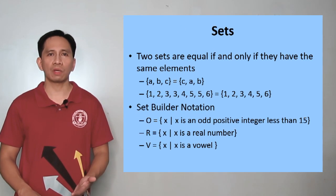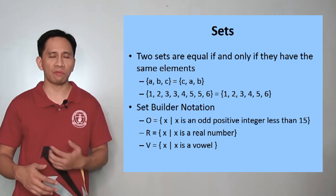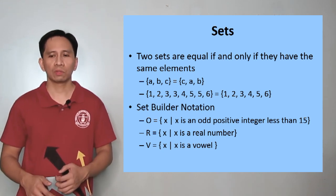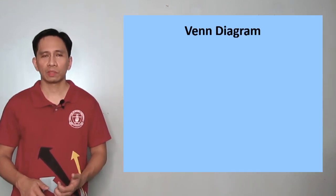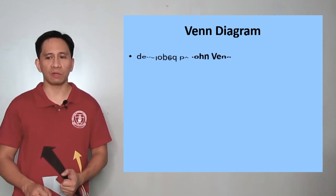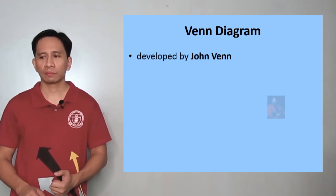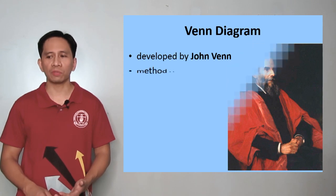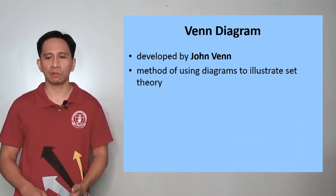It is easier for us to understand set theory if we use graphical representation called Venn diagram. Venn diagram was developed by John Venn. It is a method of using diagrams to illustrate set theory.